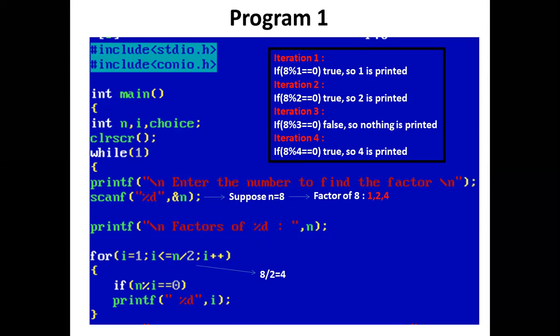Now i is incremented by 1. 1 plus 1 is 2. The condition is checked in the for loop: 2 is less than or equal to 4, true. So control again enters the for loop. Now if 8 mod 2 equals 0, true. So we get our second factor. The printf statement prints 2.